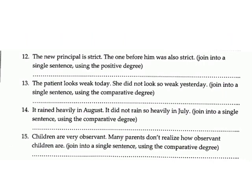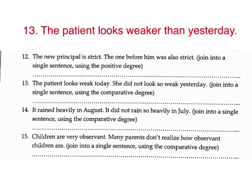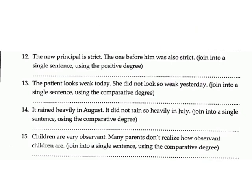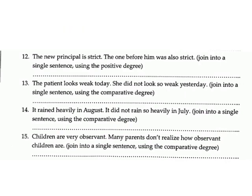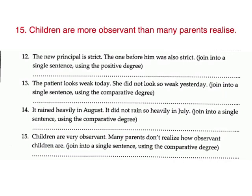13. 'The patient looks weak today. She did not look so weak yesterday' — join into a single sentence using the comparative degree. Answer: The patient looks weaker than yesterday. 14. 'It rained heavily in August. It did not rain so heavily in July' — join into a single sentence. Answer: It rained more heavily in August than in July. 15. 'Children are very observant. Many parents don't realize how observant children are' — join into a single sentence using the comparative degree. Answer: Children are more observant than many parents.